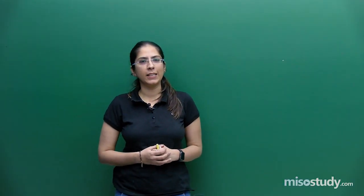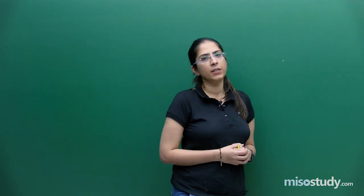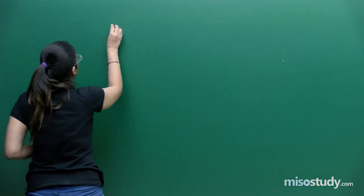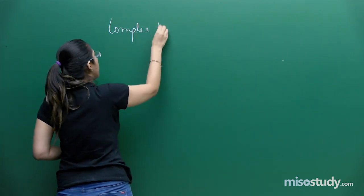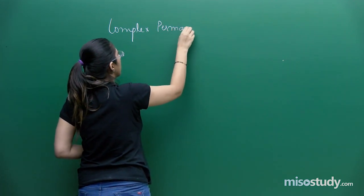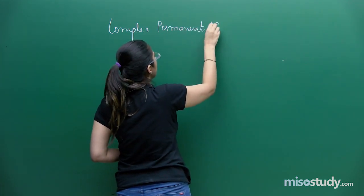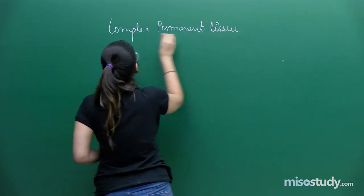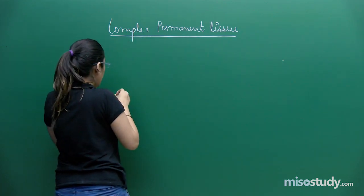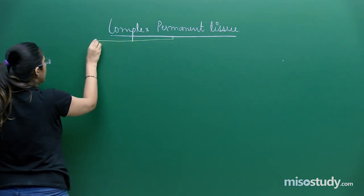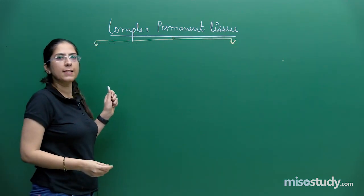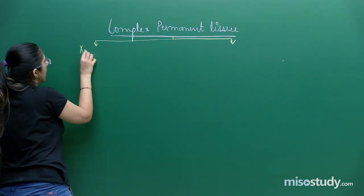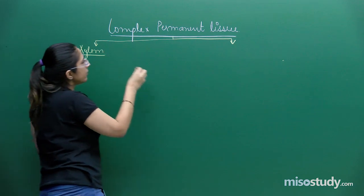Hello students, welcome to Meso Study again. We were discussing about complex permanent tissue, specifically phloem. Let's revise what we have done first, then we'll proceed further. Complex permanent tissue is made up of different types of cells. We have already studied two types: xylem, which helps in conduction of water and minerals, and phloem, which helps in conduction of food — mainly translocated in the form of sucrose.